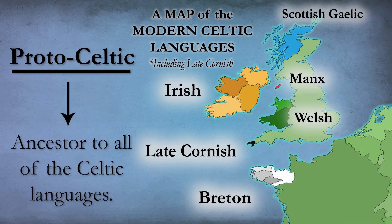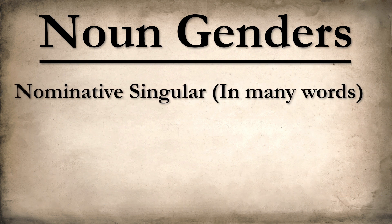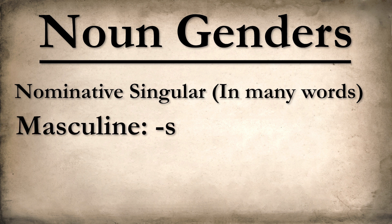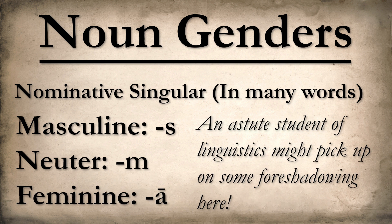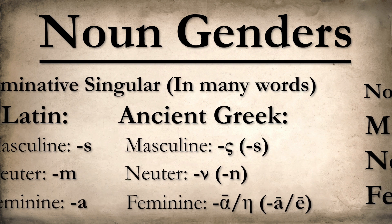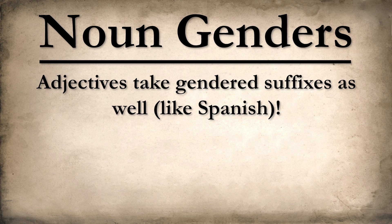Proto-Celtic, the ancestor to all of the Celtic languages including Irish, Scottish Gaelic, Manx, Welsh, Breton, and Cornish, is theorized to have had three noun genders with pretty distinct nominative singular endings. The nominative singular ending is used when the noun is the subject of a sentence, which could be seen as its default form. Nouns in the masculine gender generally ended in -os, nouns in the neuter gender generally ended in -om, and nouns in the feminine gender generally ended in a long -ā. An astute student of linguistics might pick up on some foreshadowing here. For any of those familiar with Latin or Greek, these suffixes should look decently familiar — that's the Indo-European family for you. These endings were reflected on adjectives which modified those nouns as well, just like in most modern Romance languages today, such as Spanish and French.